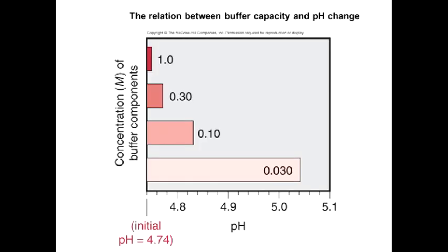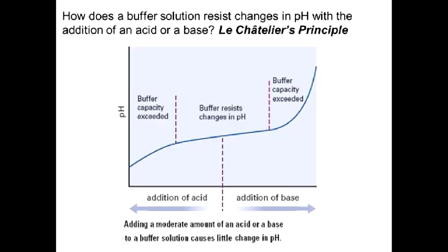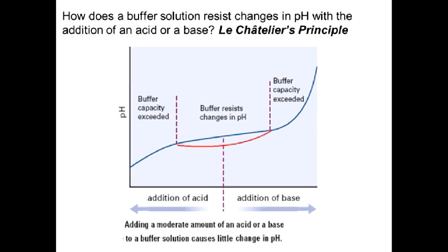Buffer capacity depends on the concentration of buffer components — the higher the concentration, the greater the buffer capacity. This picture shows that a buffer can resist pH change only within a small interval, in the case of addition of a small amount of strong acid or strong base.